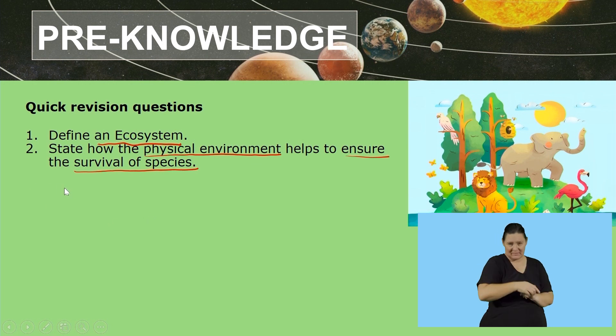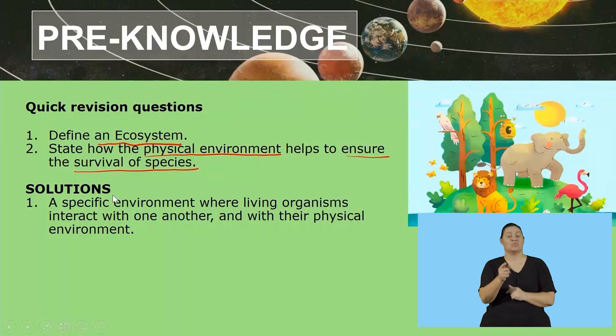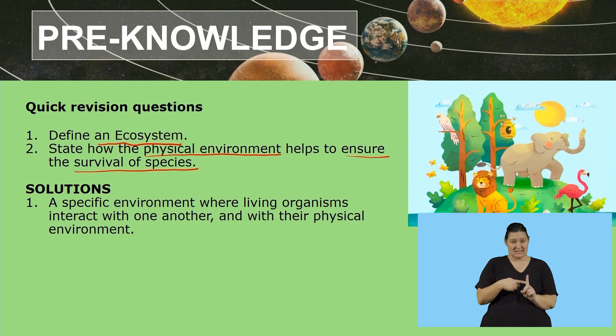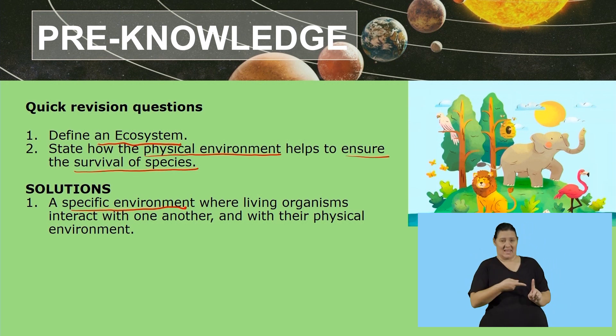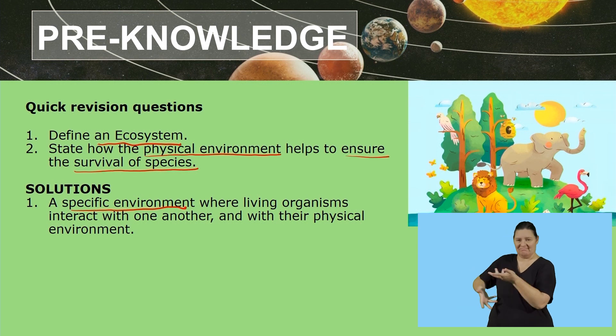Let us jump into our solution — I'm assuming that everybody has already thought of the answer by now. The first answer is: a specific environment where living organisms interact with one another and with their physical environment. Those are the three aspects you need to know whenever you are defining an ecosystem — you need to know that it is an environment.